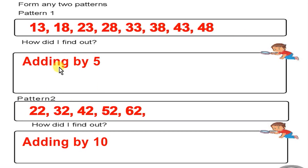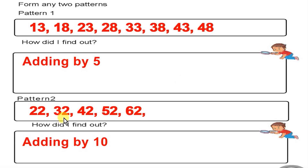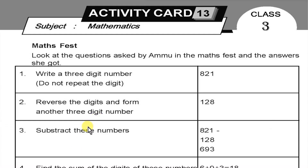How did I find out? We add 5 each time. The next pattern is: 22, 32, 42, 52, 62. The difference between each number is 10. So we add 10 each time to get the next number.